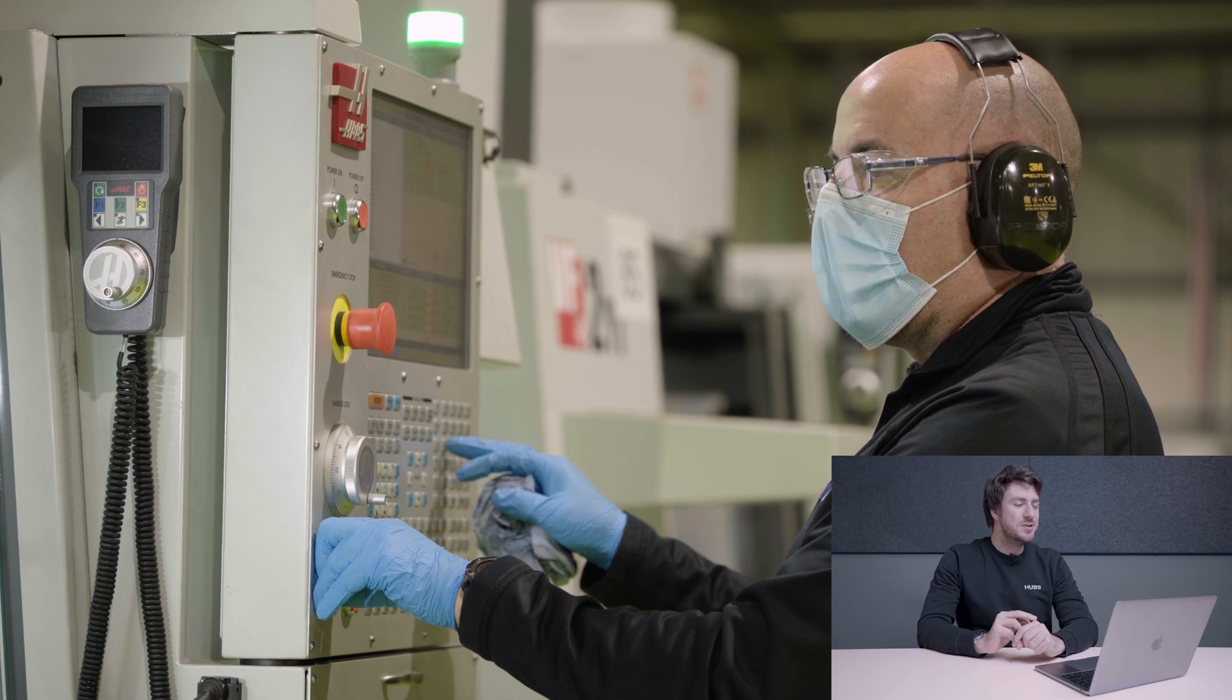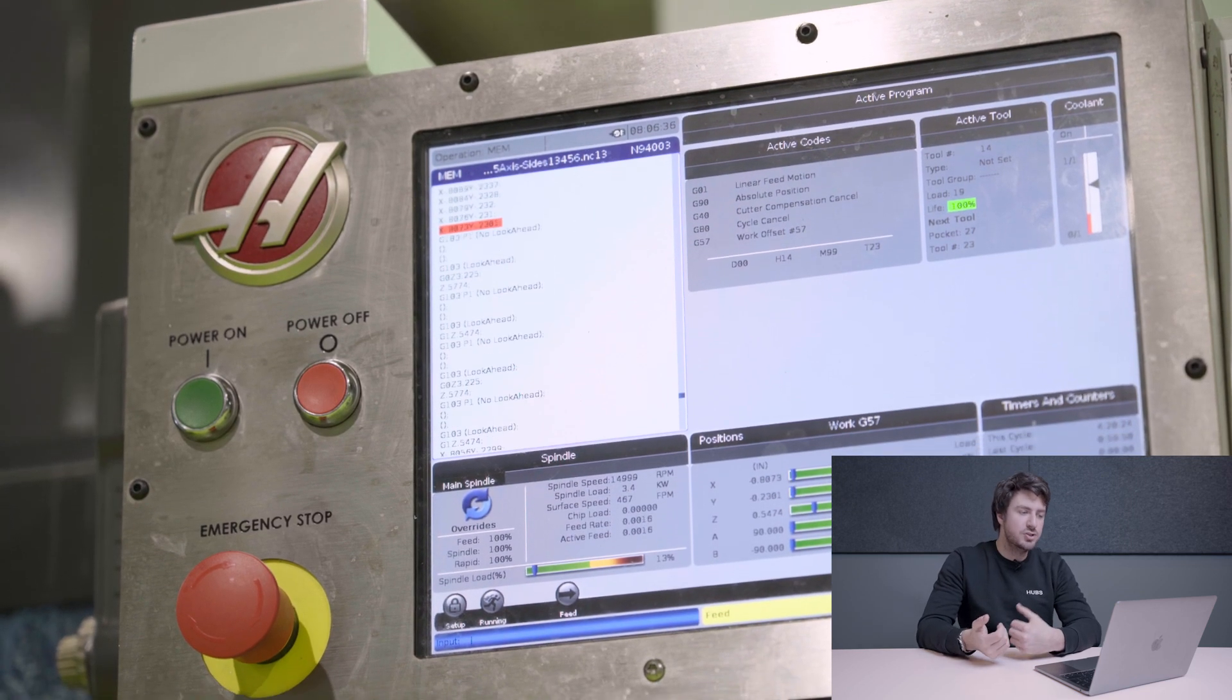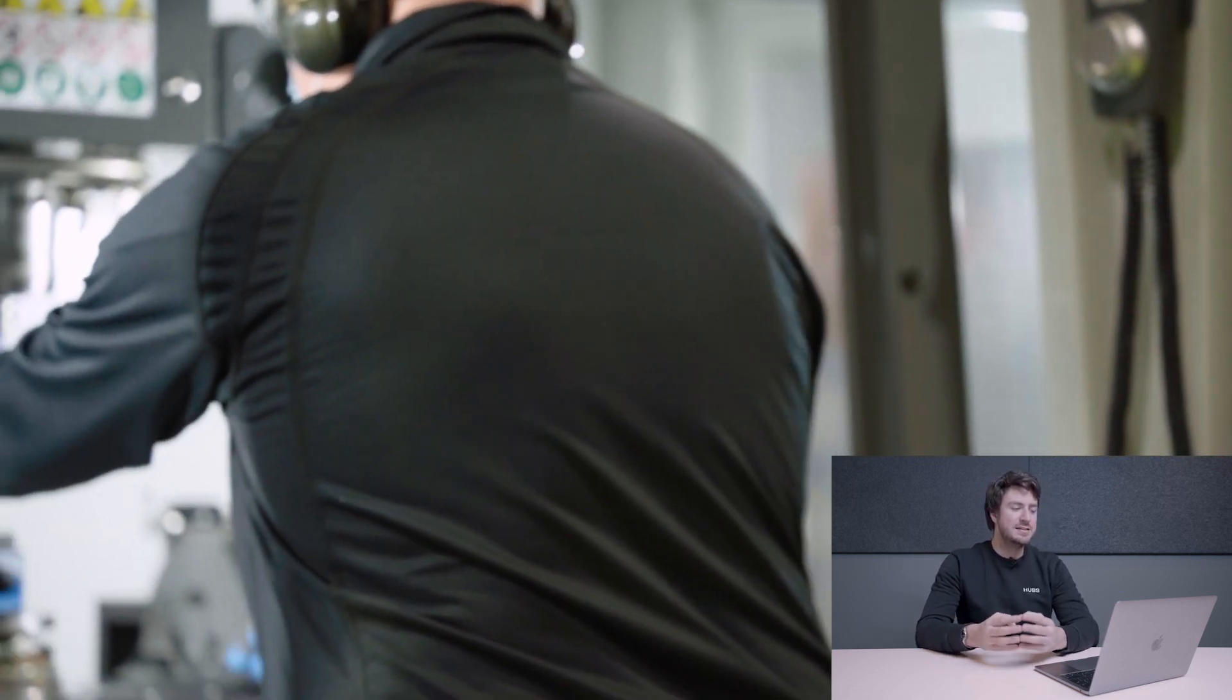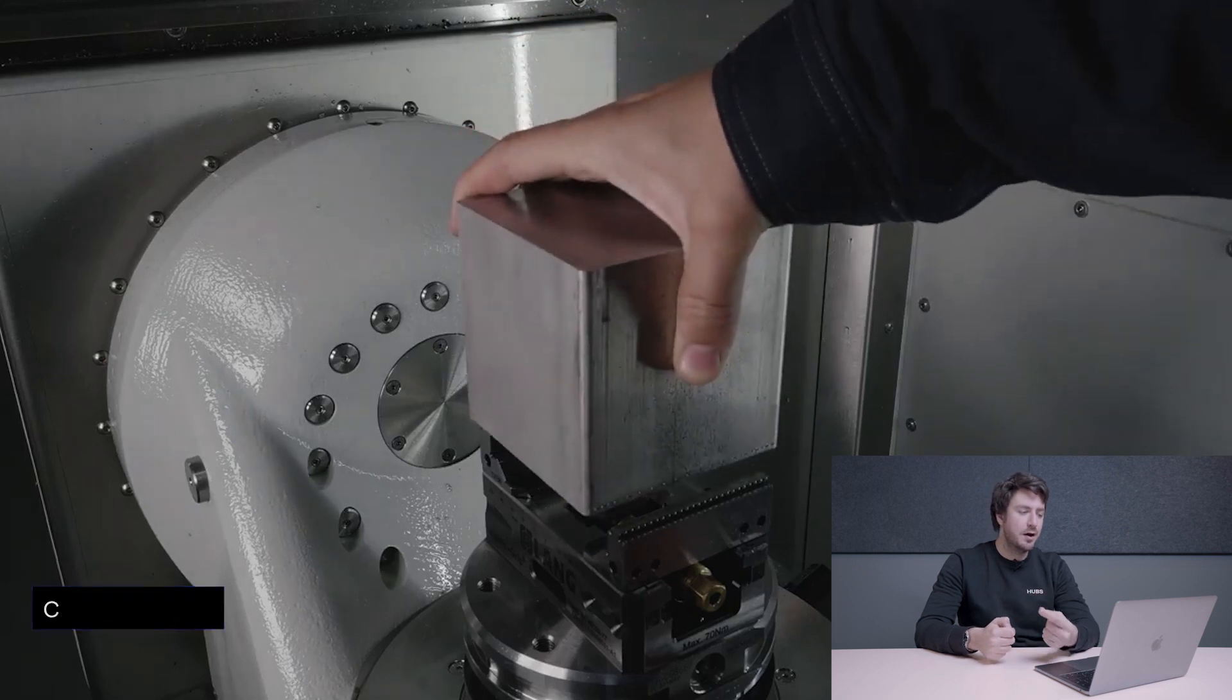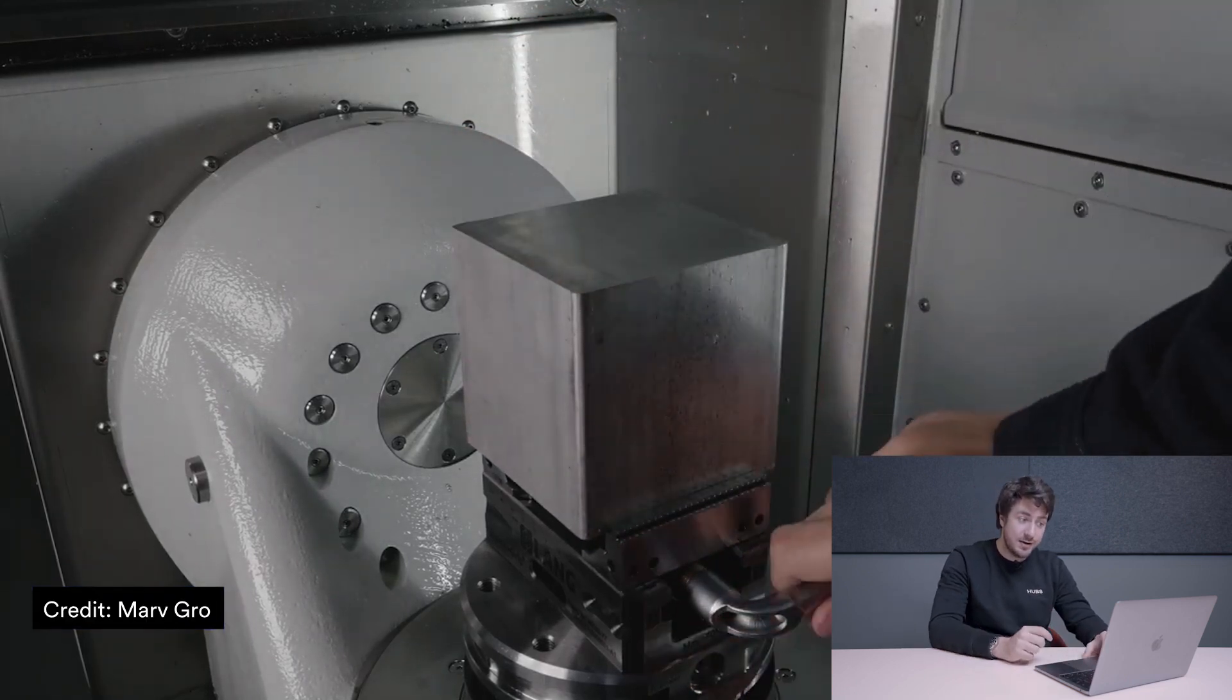Step two: coding. Once you upload your design it needs to be translated by the machine operator in what we call a g-code. A g-code is basically a set of commands that are used to machine the component and it's loaded onto the machine. The next step will then be to get the right material and mount it inside the machine as you can see right here.